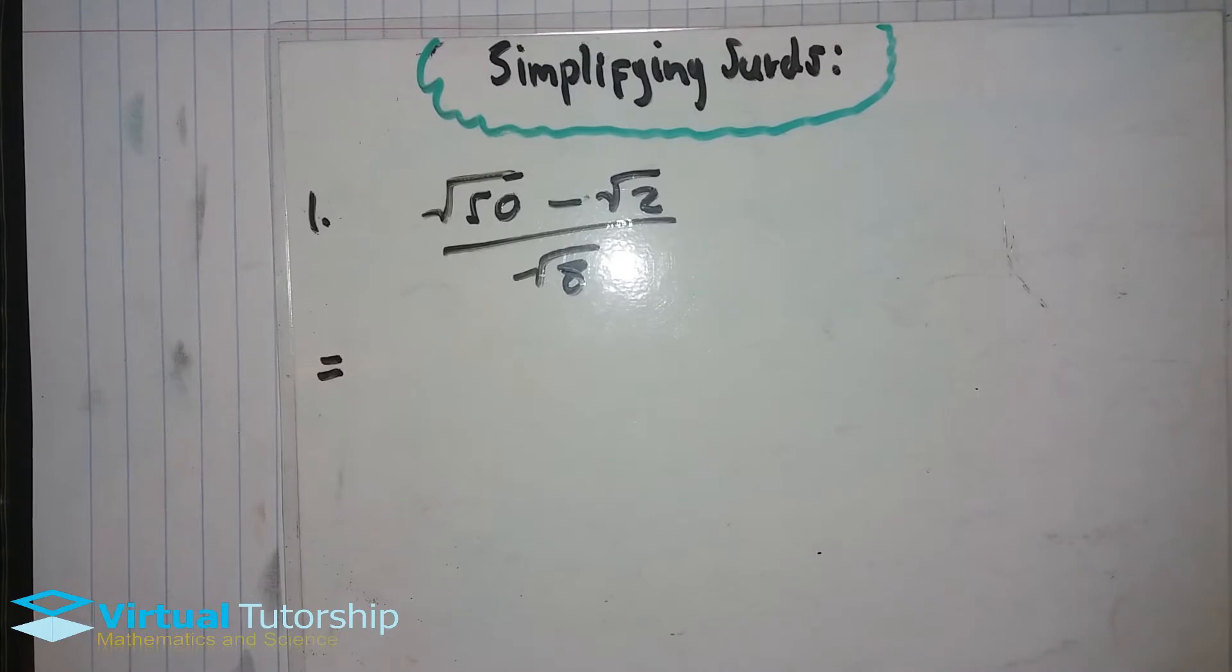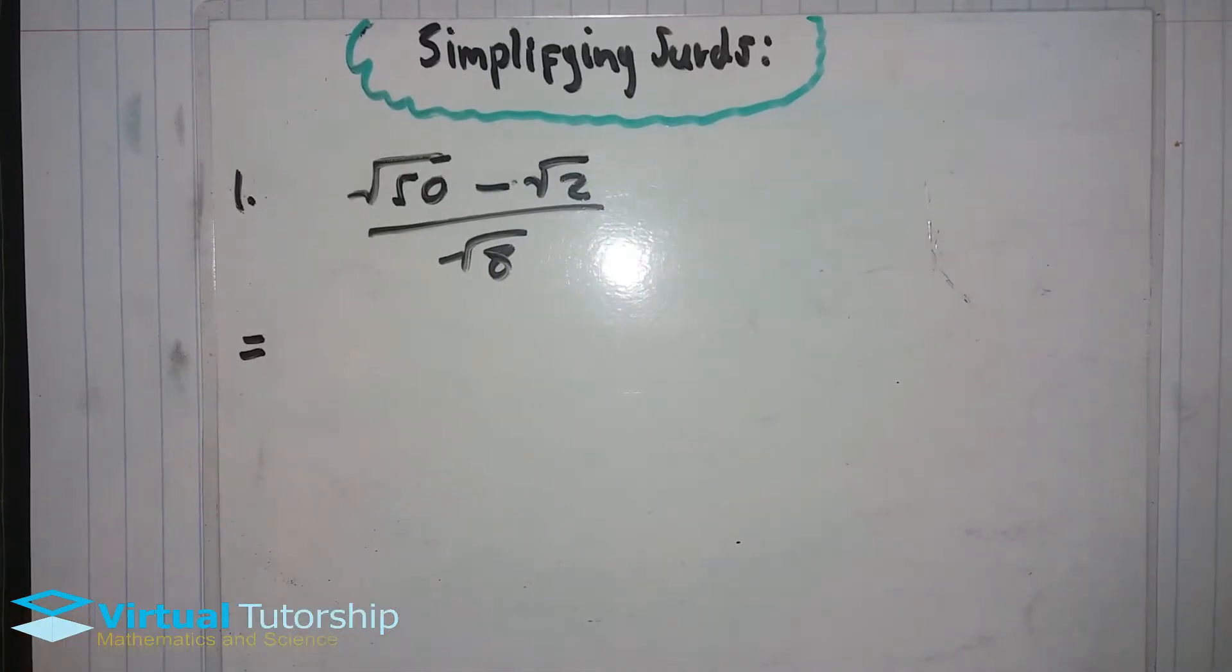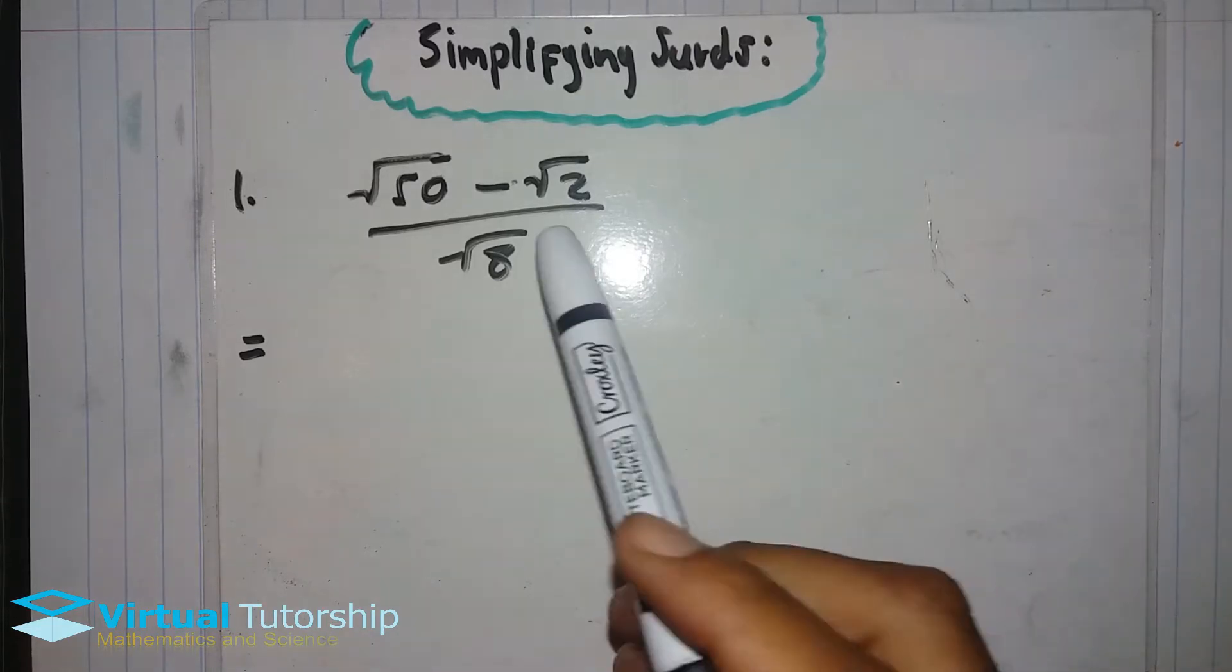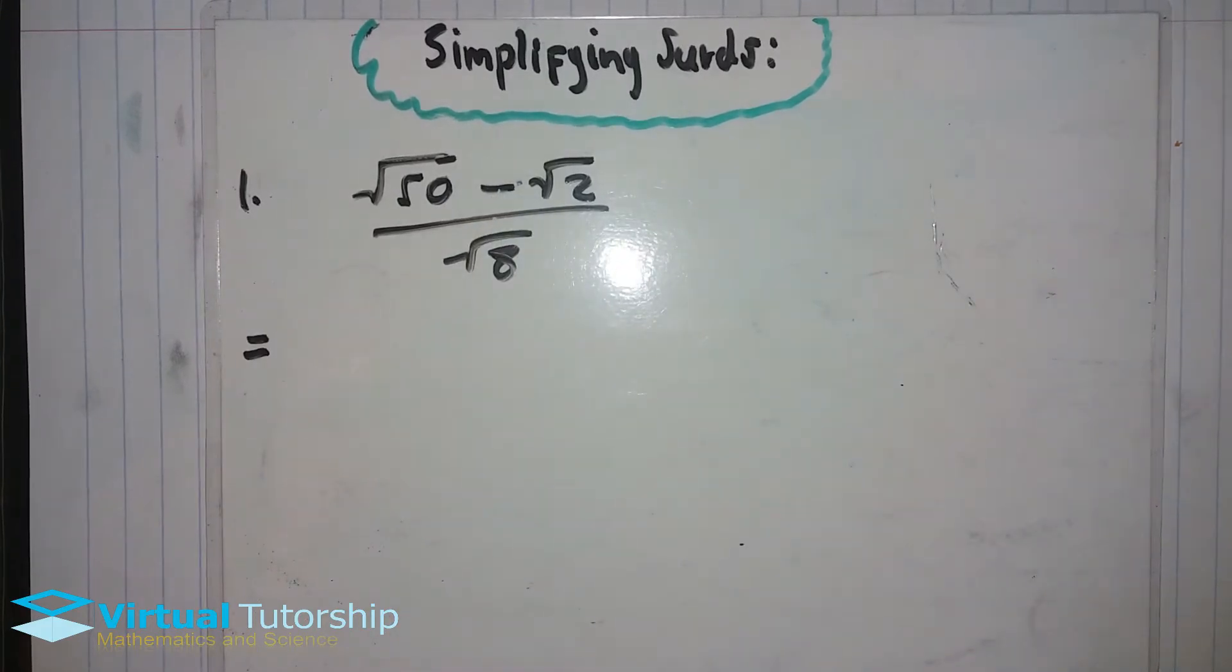Basically, the simplification of surds involves all of the mathematical operations: addition, division, multiplication, and subtraction of radicals.